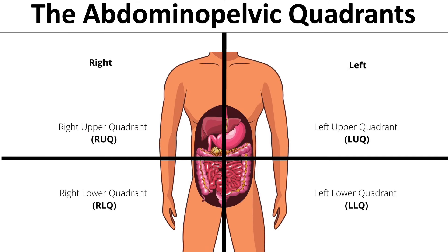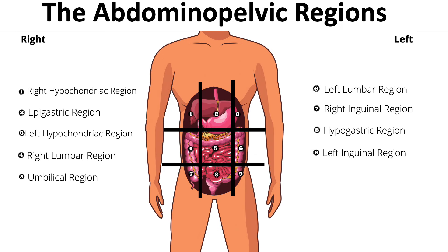Another region is the abdominal pelvic region, which consists of the abdominal area and the pelvic area collectively. It consists of four quadrants — the upper and lower and the left and right quadrants. You might need to know what organs are in each quadrant, so take some time to look that over. There are also about nine abdominal pelvic regions, so know where they are located.